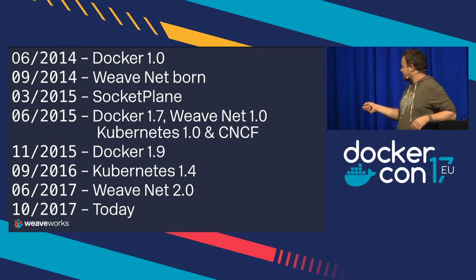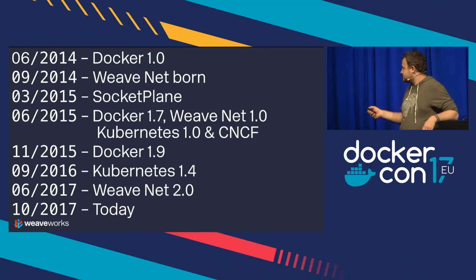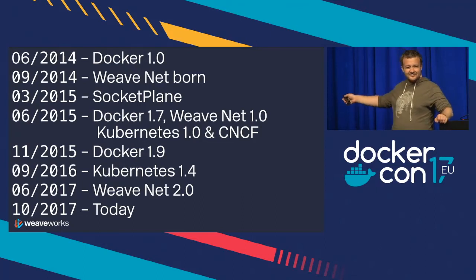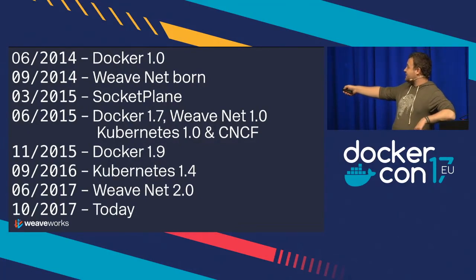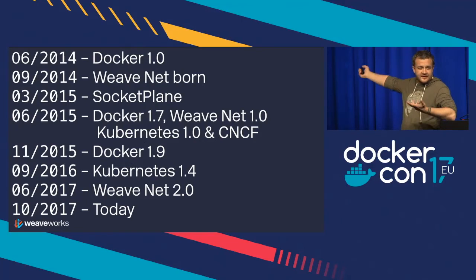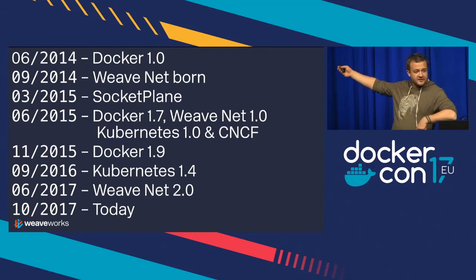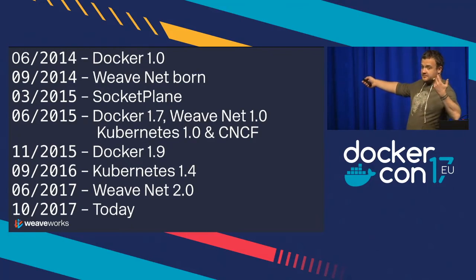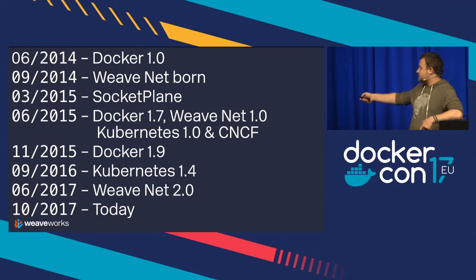In November 2015, Docker 1.9 came out and that featured LibNetwork becoming stable. To recap the key networking events: LibNet got released, the Socketplane team joined Docker, Docker network plugins and LibNetwork became a thing in June 2015. Docker 1.7 and LibNet went 1.0, Kubernetes 1.0 launched, and the CNCF was founded. Later, LibNetwork went stable.